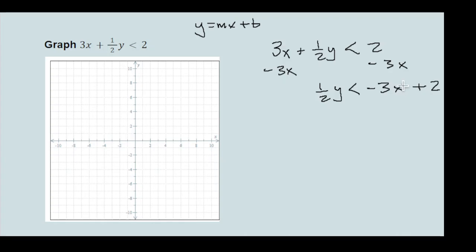I'm writing it that way because I like it when the slope is the first number on the right side. What we're going to do next is multiply everything in this entire equation by positive 2 — that's the reciprocal of one-half. It will get rid of one-half and make the coefficient in front of y equal to 1, which is what we want.